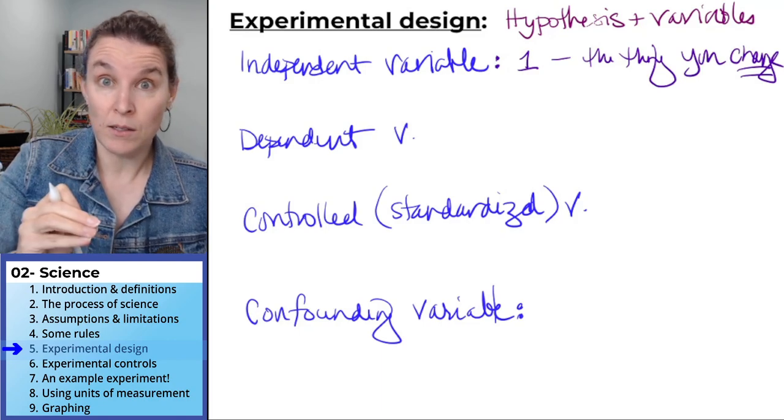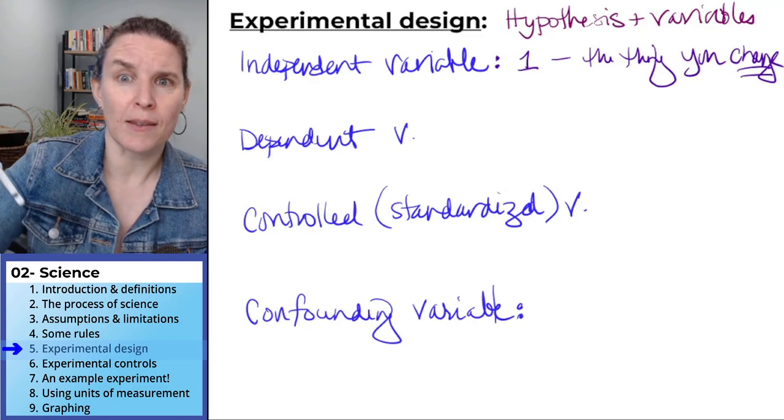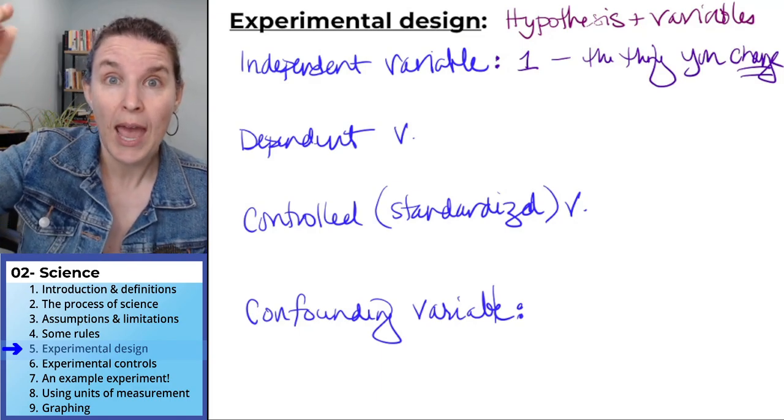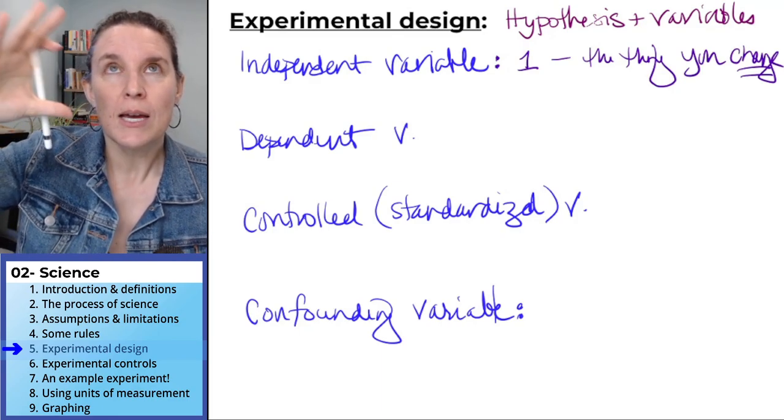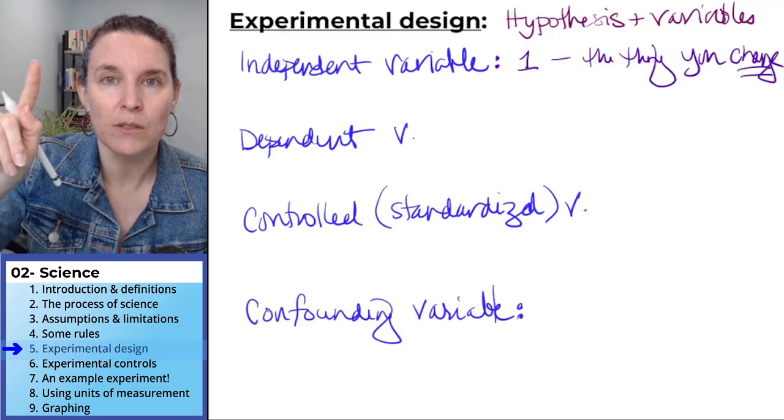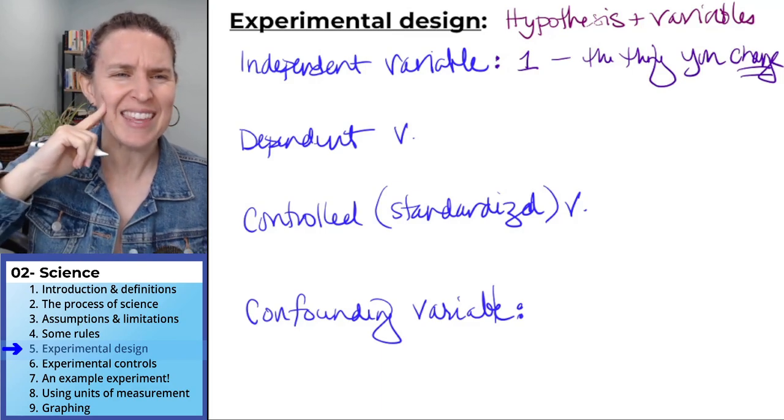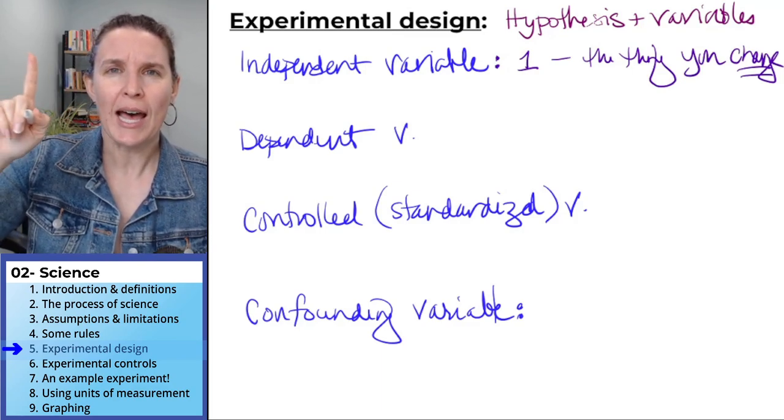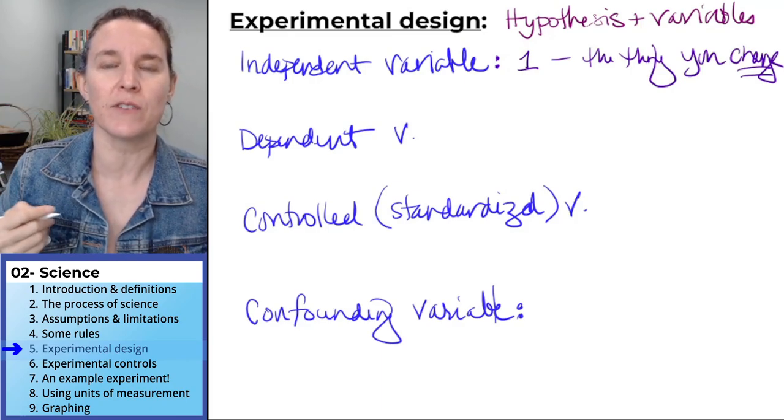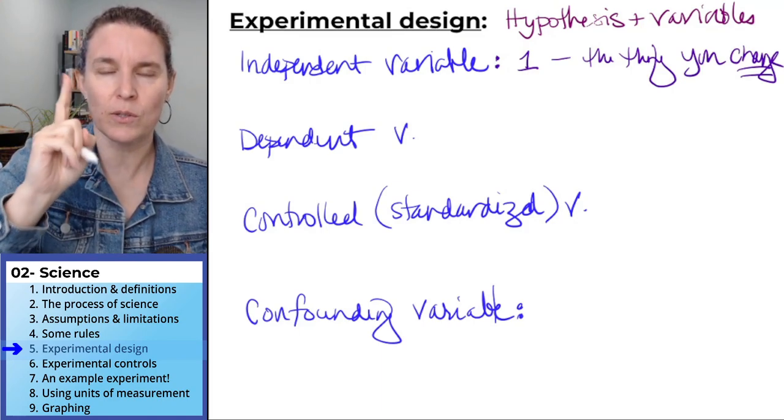So in one group, you're going to have no sodium, and the next one, you're going to have a little bit, and then you're going to have a little bit more, and then you're going to have a lot of sodium. And you've got this range of changes to one variable: sodium concentration. The independent variable, there's only one. The independent one is alone. There's only one of them.